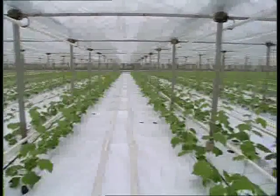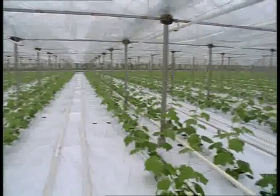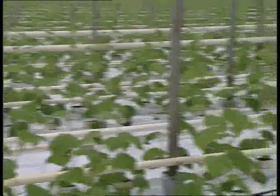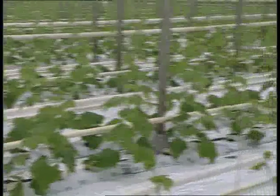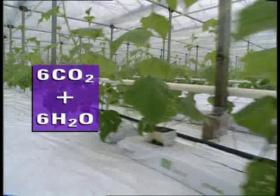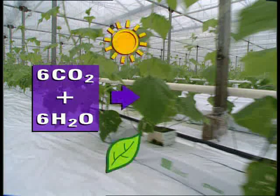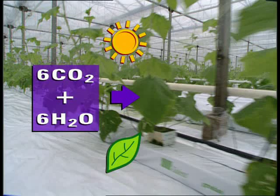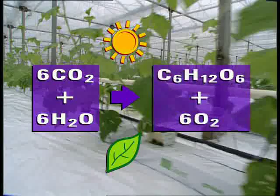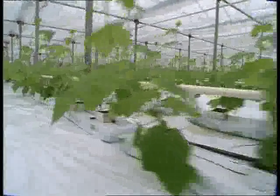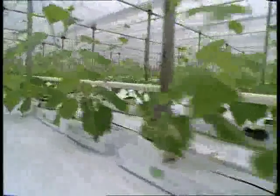This greenhouse produces over four million cucumbers a year in a carefully controlled environment. Plant growth is caused by a process known as photosynthesis. Carbon dioxide and water combine in the presence of sunlight and chlorophyll, a chemical which gives plants their green colour, to form sugars and oxygen. This reaction enables plants to produce food and grow.